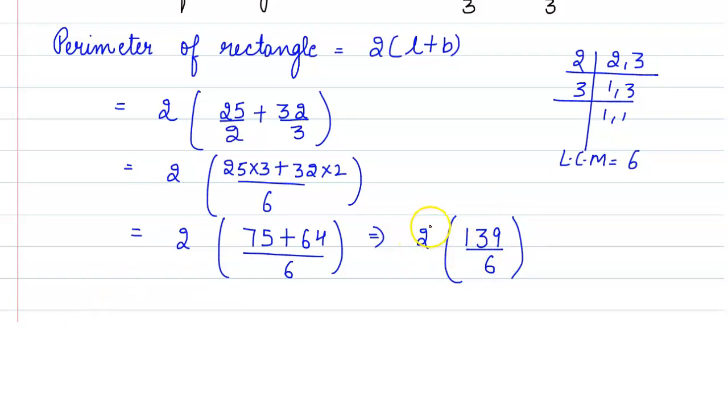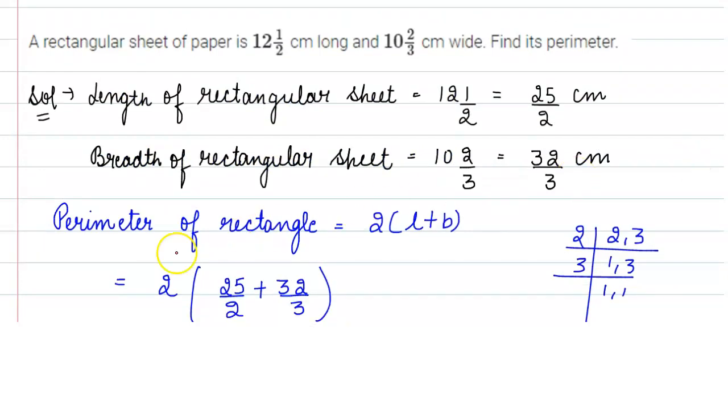From here we get 2 × 139/6 = 139/3 centimeters. So the answer is 139/3 centimeters. This is our answer. I hope this is clear. Thank you.